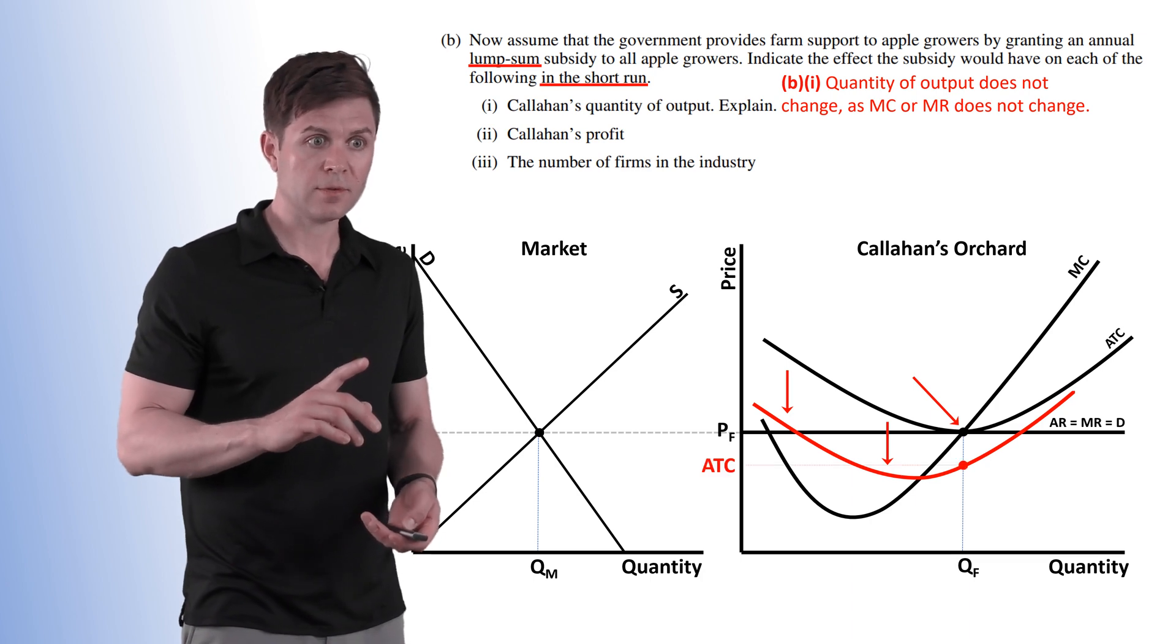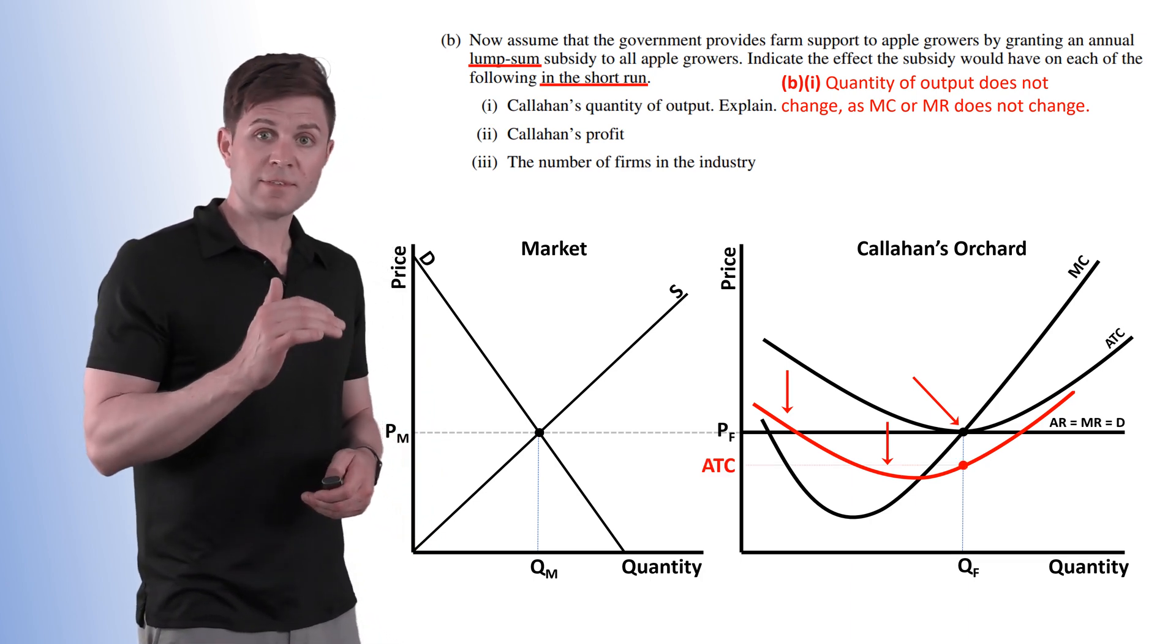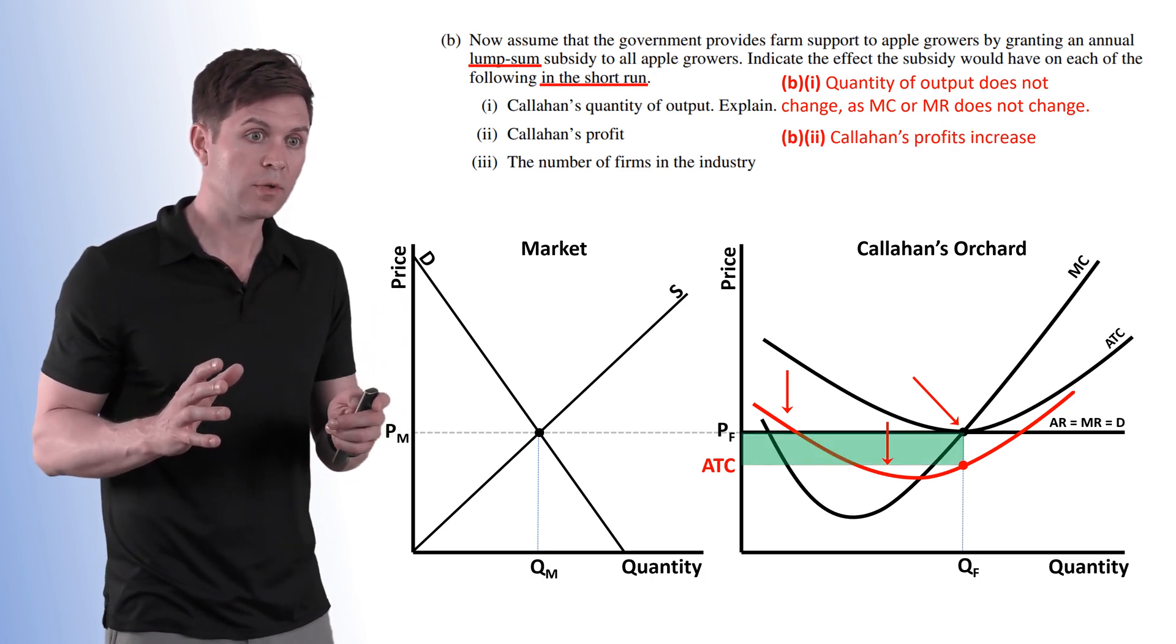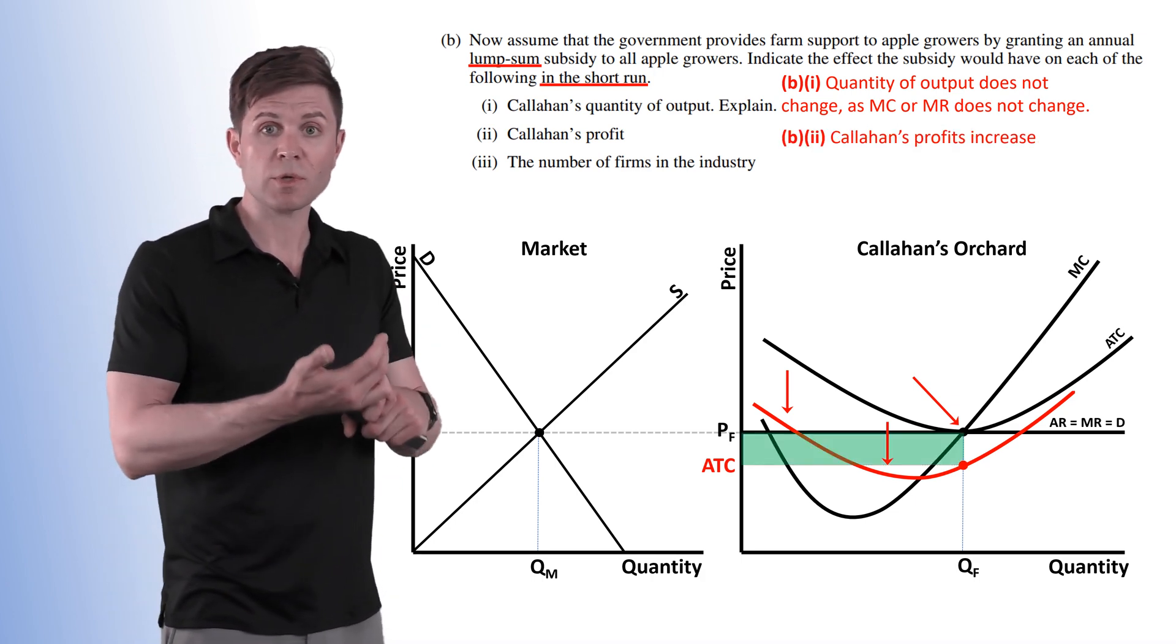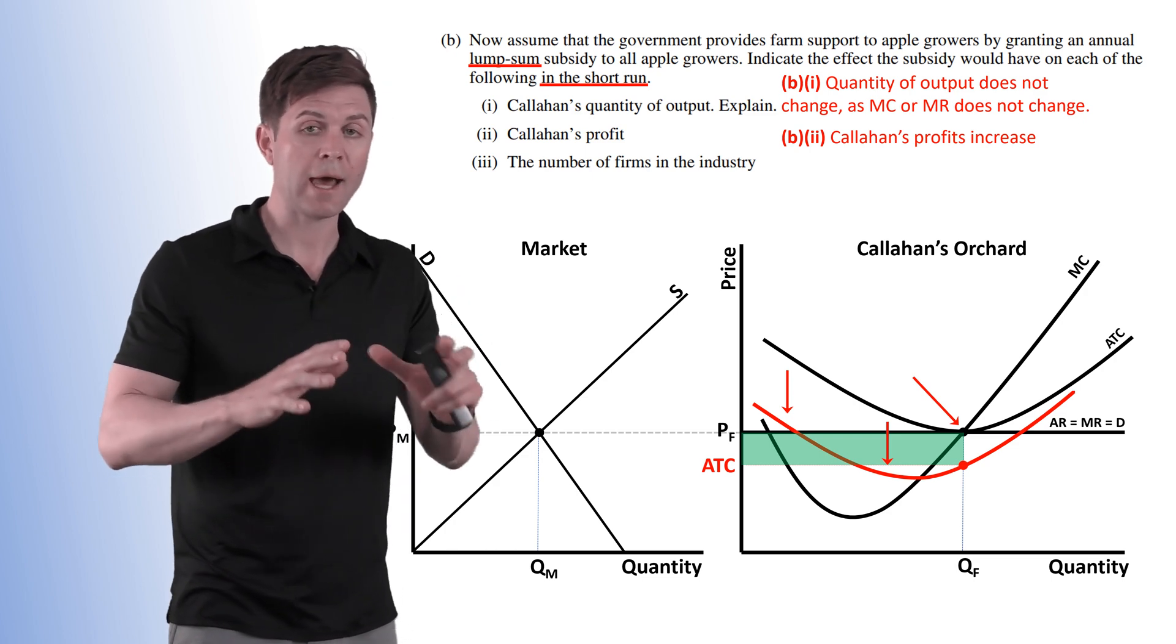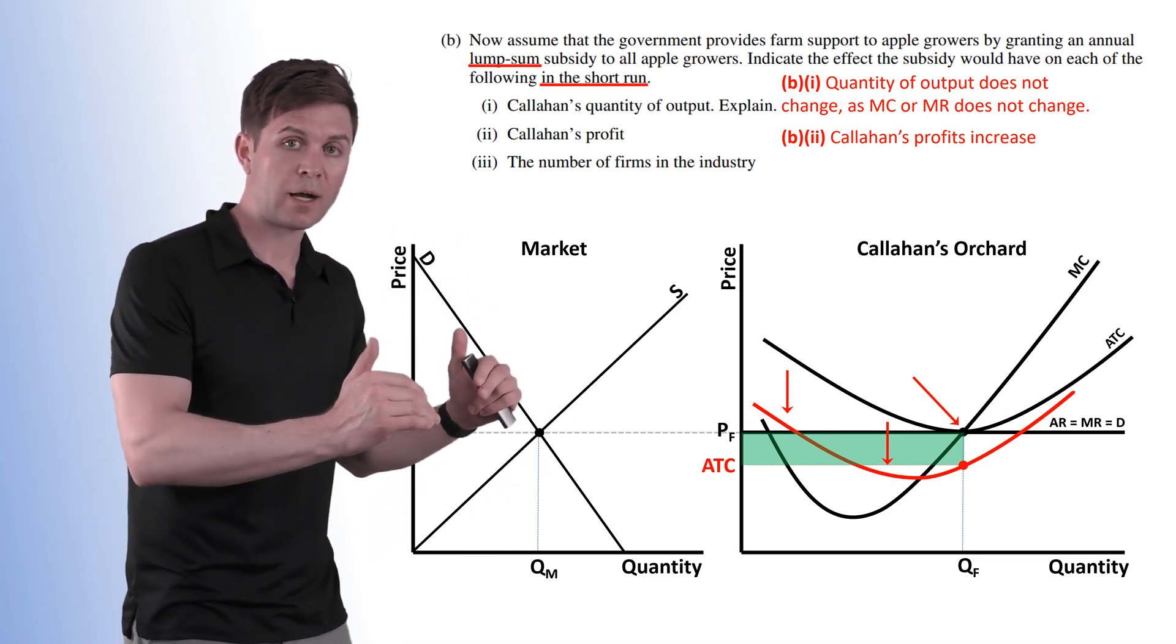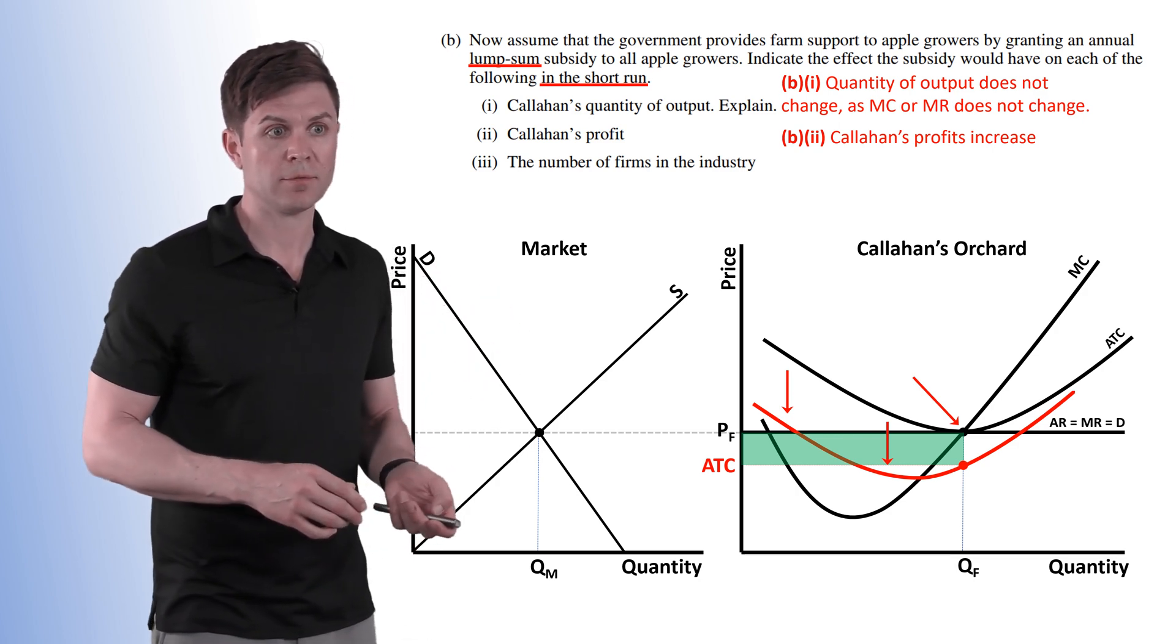Callahan's profit. Our ATC now is much lower than it was at the profit maximizing quantity of output. So we now have an increase in profits. We were at long run equilibrium, zero economic profits. ATC went down so we know we're going to earn at least some positive economic profits.